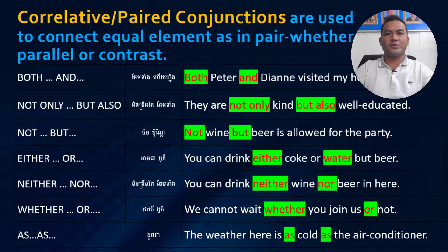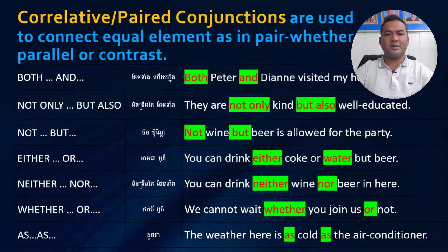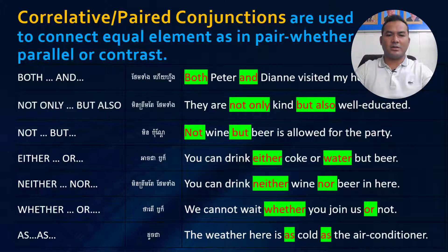Let's take a look at the examples. With 'both/and': 'Both Peter and Diane visited my home.' With 'not only/but also': 'They are not only kind, but also well-educated.'